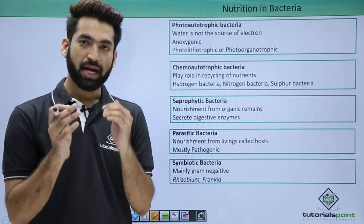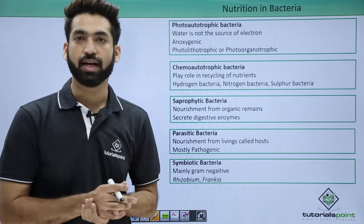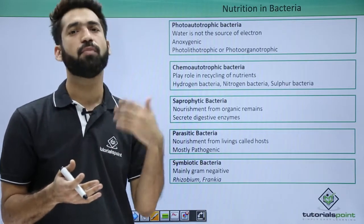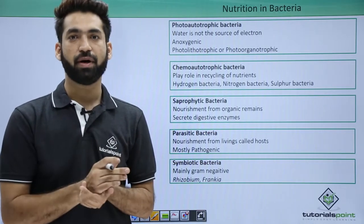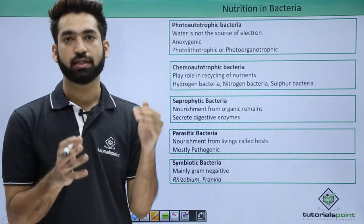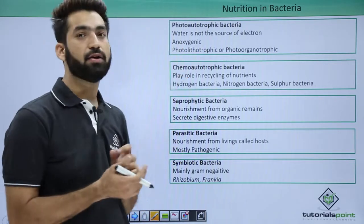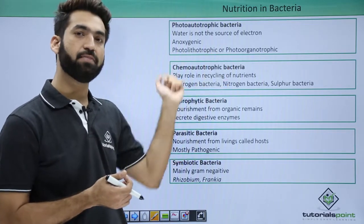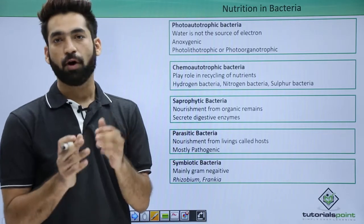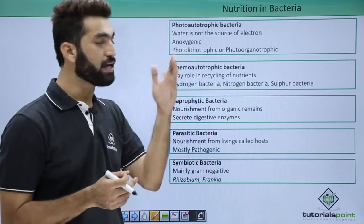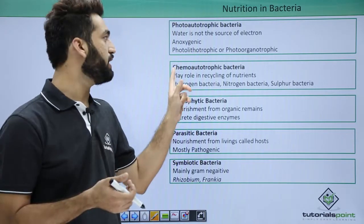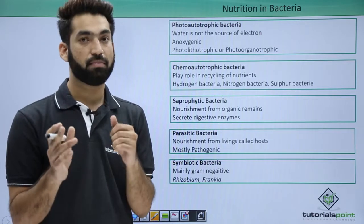But what happens in bacteria? In bacteria, water is not the source of electrons — CO₂ does not react with water. Instead, CO₂ reacts with other molecules such as H₂S or other sulfur compounds or organic compounds to form glucose. Since water is not involved, oxygen is not released as a by-product. So bacterial photosynthesis is always anoxygenic, unlike higher plants where water is the electron source and oxygen is released, making plant photosynthesis oxygenic.